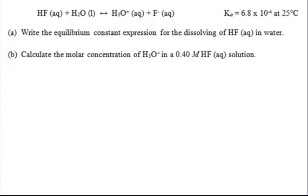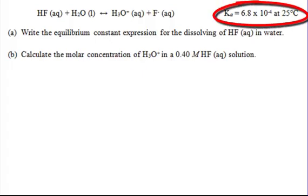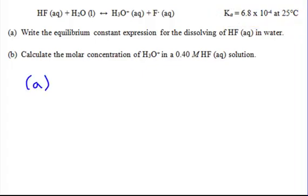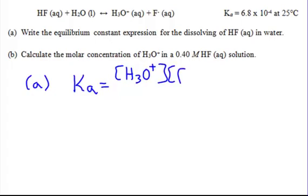Let's start with this weak acid problem. It's hydrofluoric acid, and you can see it's dissociating and coming to equilibrium. You can tell it's a weak acid problem because of the Ka they've given you. The first thing you want to do for Part A is write an equilibrium expression: Ka is equal to H3O+ times F- on top, over HF on the bottom. That's Part A.